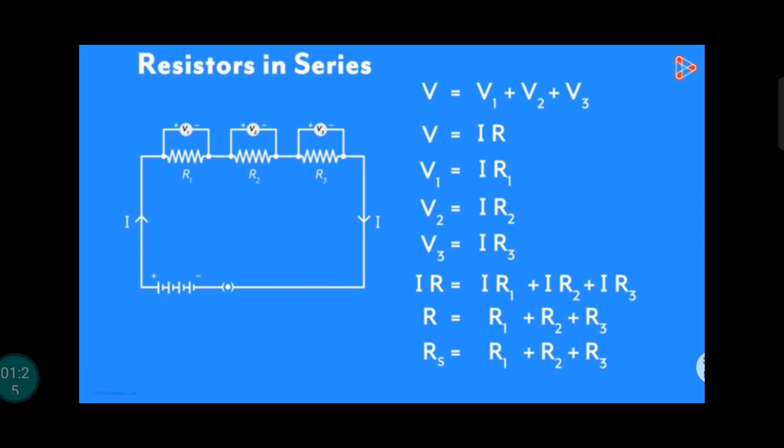As the current flows through each resistor is same, I is taken as common on both sides and cancelled. So R is equal to R1 plus R2 plus R3.